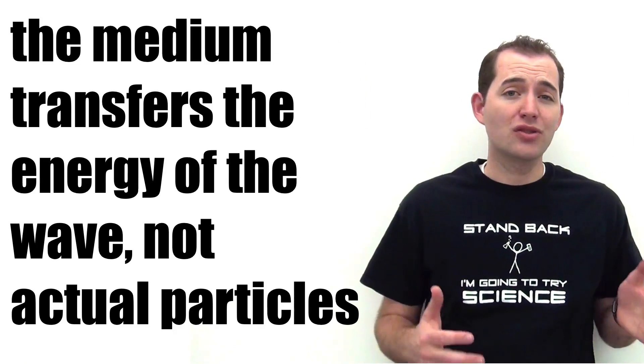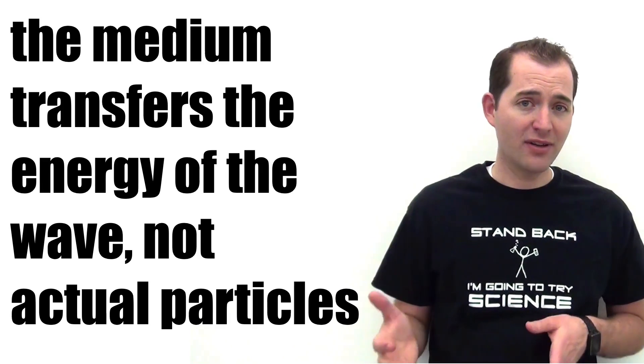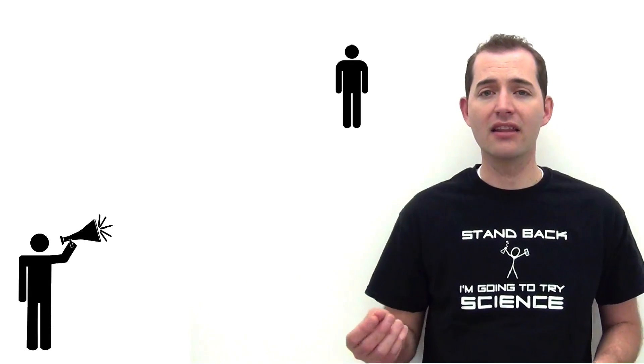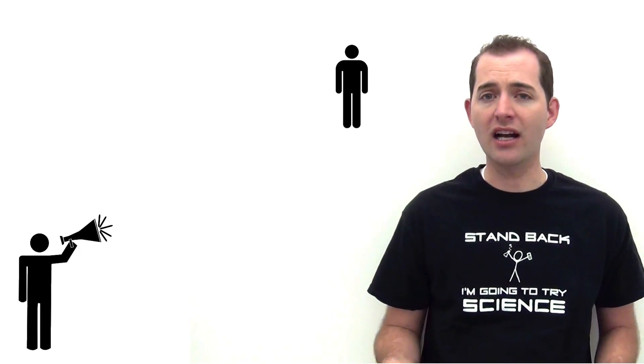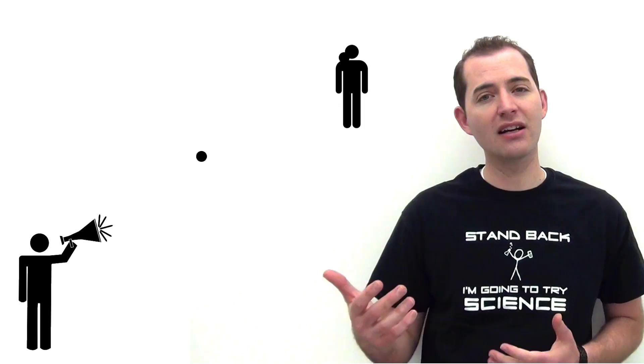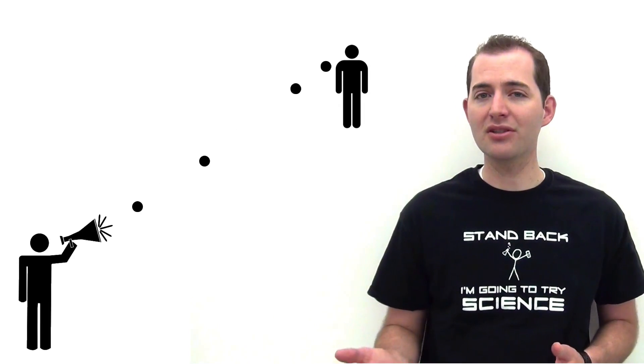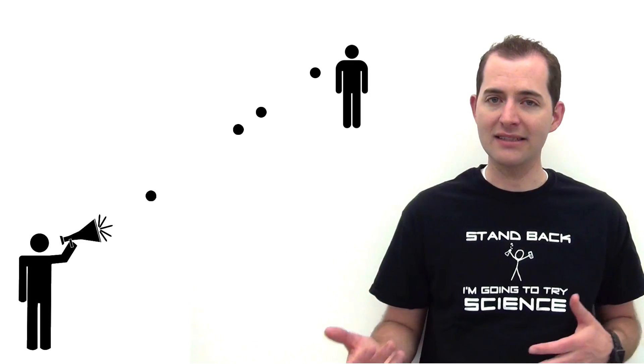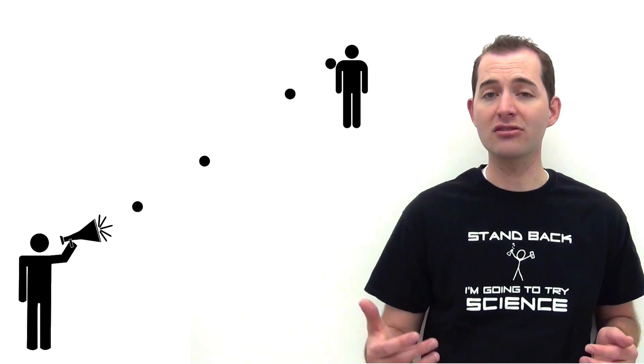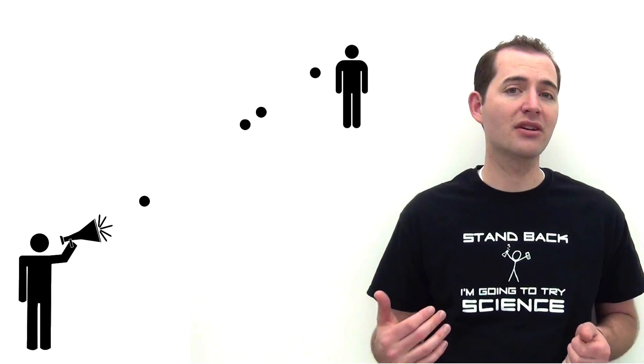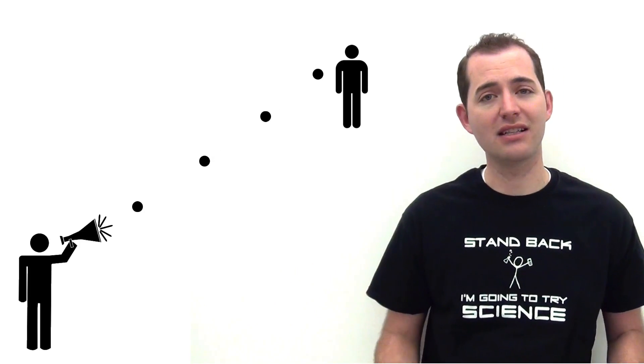It's important to note that the medium transfers the energy of the wave, not actual particles. For example, if you shout at a person across an arena, there are not particles moving from your vocal cords to their ears. In fact, all of the particles between you and the person are only moving very slightly, as the energy of the wave is transferred from particle to particle, all the way from your vocal cords to the person's ear.